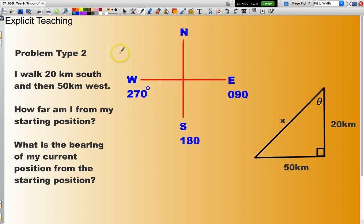OK, next problem type. I walk 20 kilometres south and then 50 kilometres west. How far am I from my starting position? In other words, I've gone down here and across here. Now, I think I've got a little image here, which I can click on. So, you notice here, I've gone down 20 kilometres to the south, then across 50 kilometres to the west.